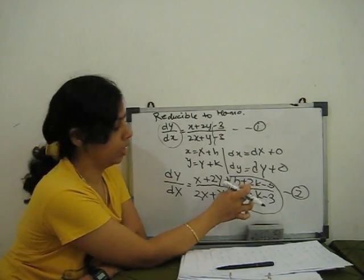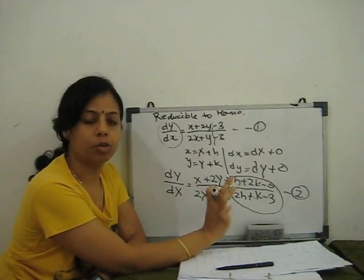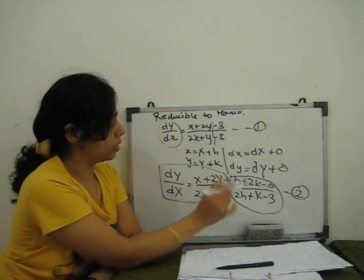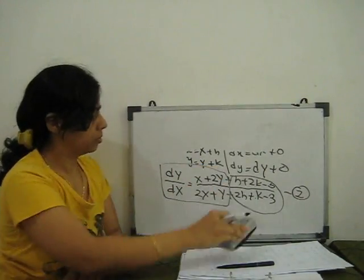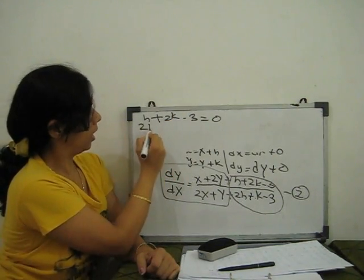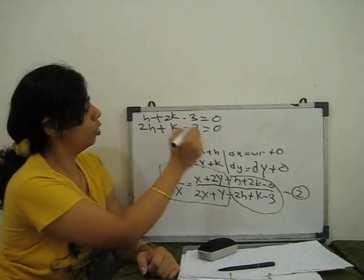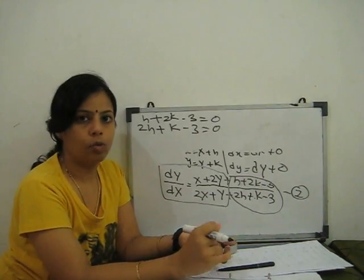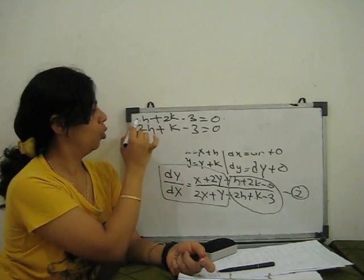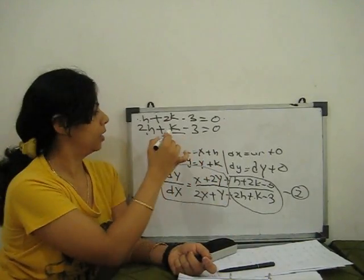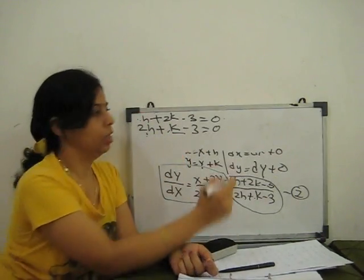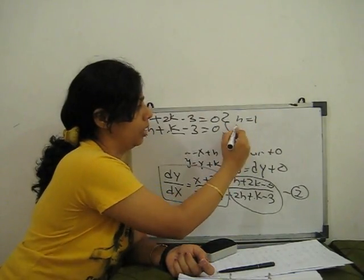When those values of h and k are substituted, our equation reduces to dY/dX = (X + 2Y) / (2X + Y). To solve h + 2k − 3 = 0 and 2h + k − 3 = 0, we multiply one equation by 2 and subtract to find h, or multiply the other by 2 and subtract to find k. Solving gives h = 1 and k = 1.